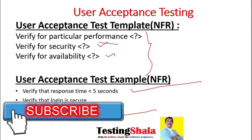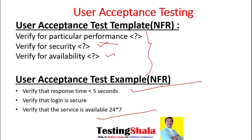Hoping you guys got a clear idea of what is an epic, what is a user story, what is acceptance criteria, and how you can convert acceptance criteria into detailed test cases, which I have explained completely with this example. If you really liked this video, please give it a thumbs up.